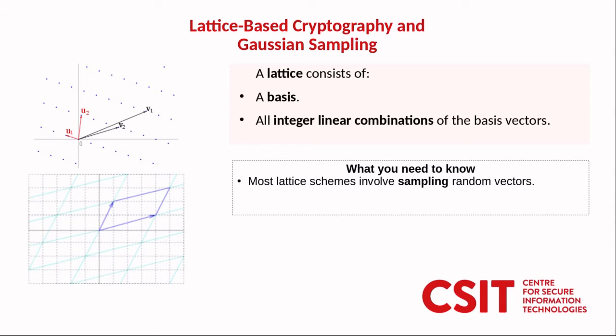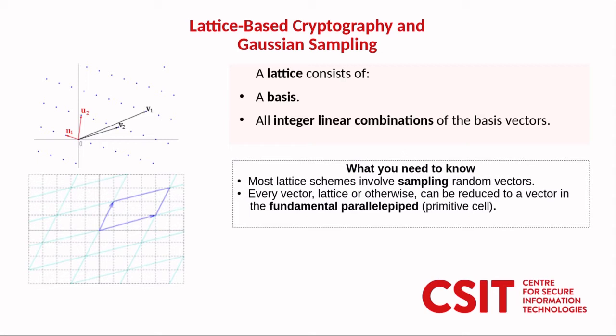The entire lattice then consists of all integer linear combinations of the basis vectors. Most lattice schemes involve sampling random vectors and if we have a vector whether it be a lattice vector or some vector in between lattice points we can reduce the vector to its equivalent in the fundamental parallelpiped. The fundamental parallelpiped is shown in the bottom left diagram in the darker blue.